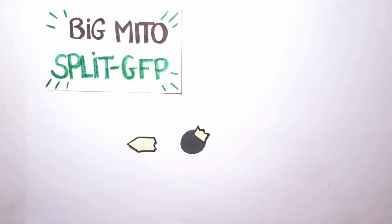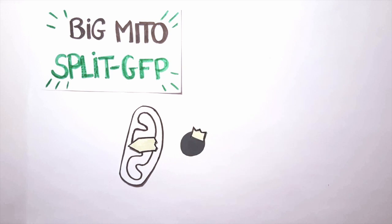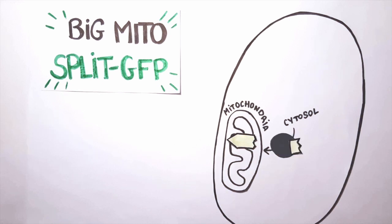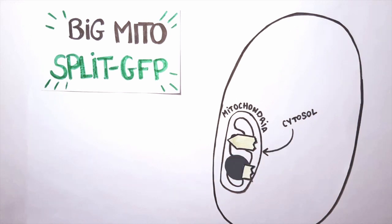The big piece of GFP is expressed in the mitochondria where it is exclusively located. If my protein of interest is actually located in the mitochondria, it can be imported in this compartment.